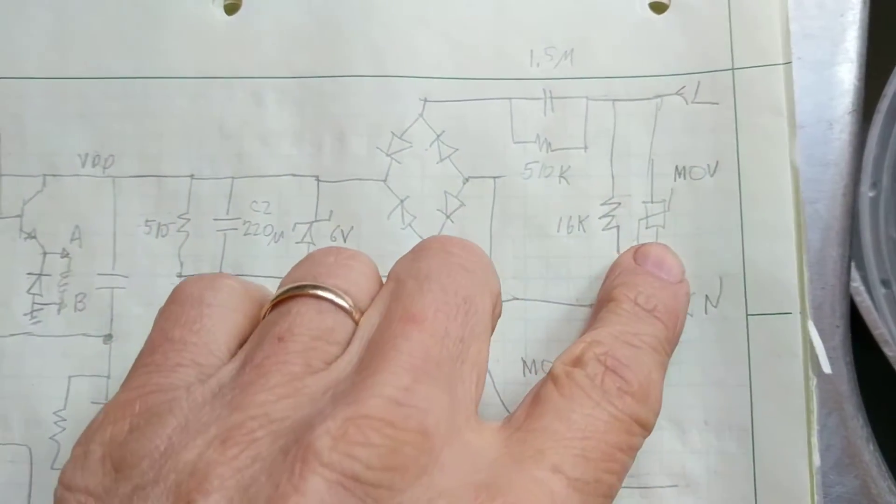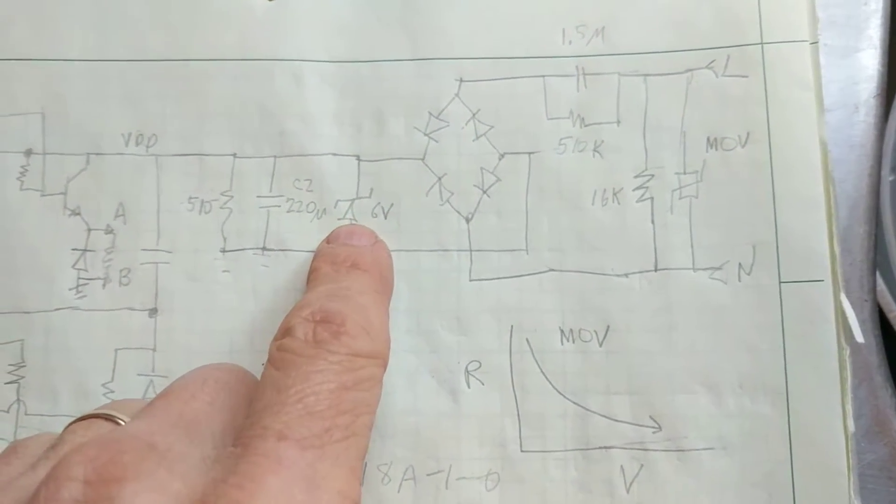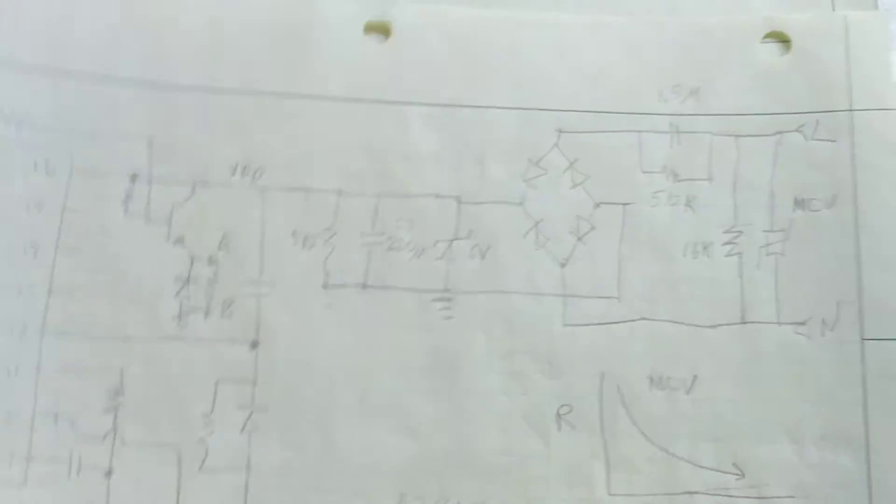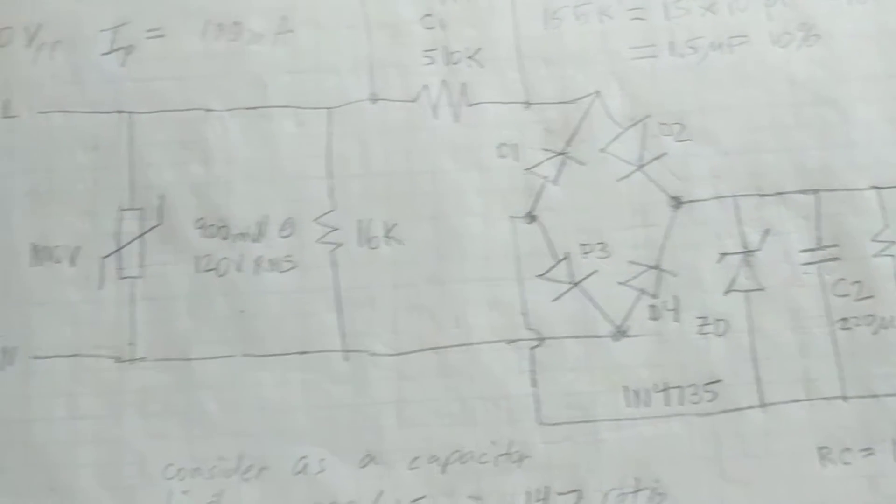This is a schematic. And there's the Zener diode, the 6 volt Zener diode. It's used in a power supply. AC to DC power supply.